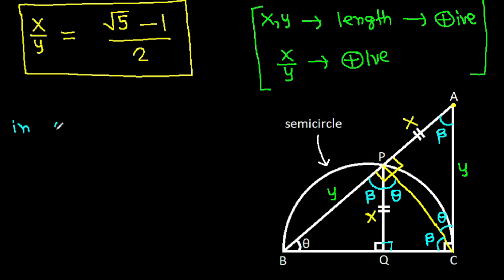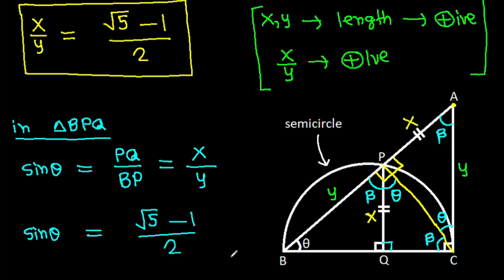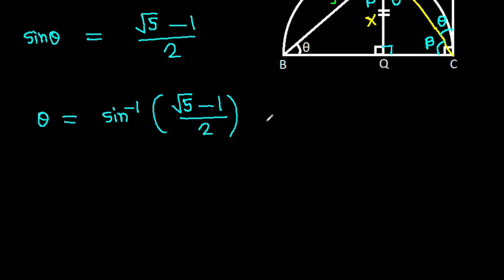Now, in triangle BPQ, sin theta equals PQ over BP, and PQ is X and BP is Y. So sin theta equals X over Y, which is root 5 minus 1 over 2. Therefore, theta equals sin inverse of (root 5 minus 1)/2, which is approximately equal to 38.17 degrees.